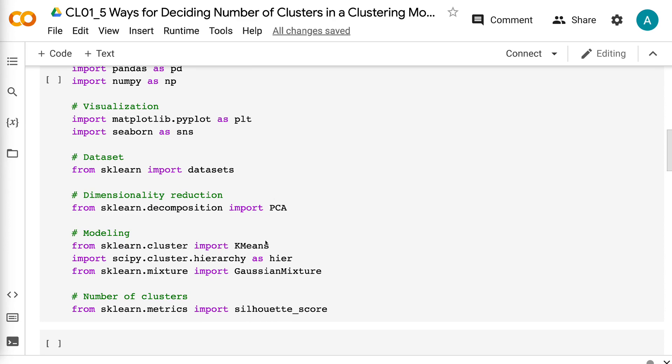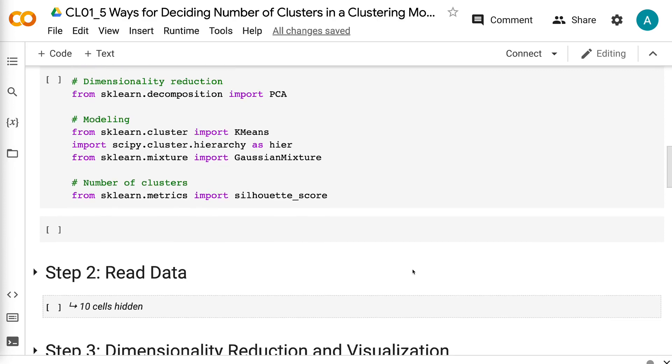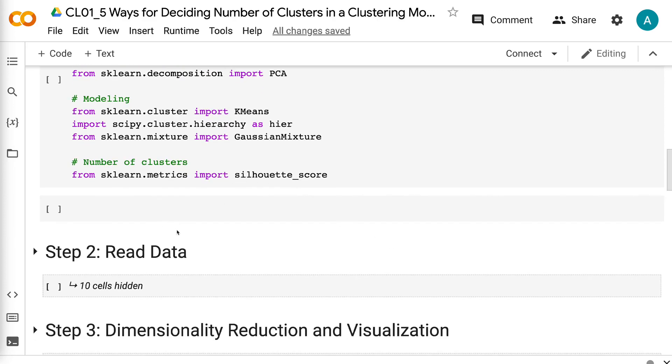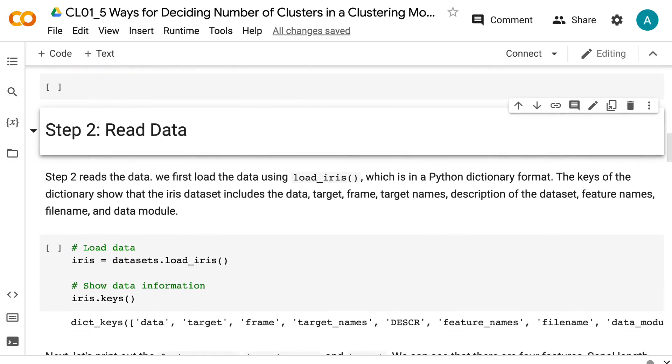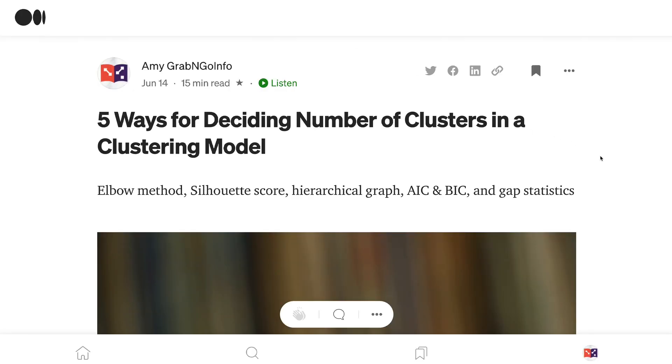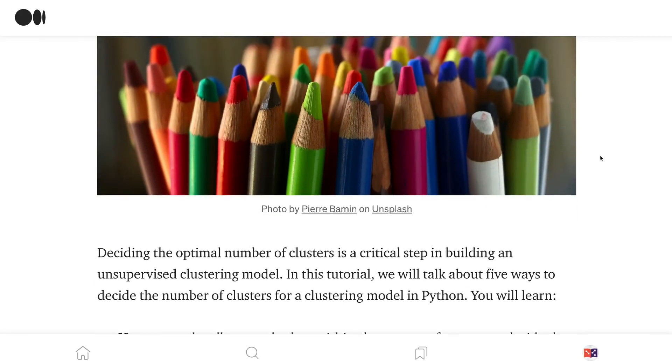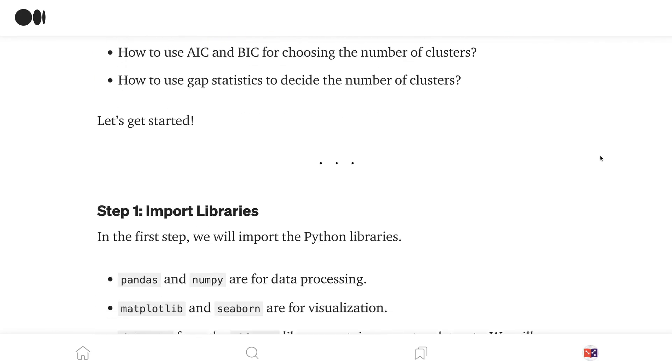K-means, hierarchical agglomerative clustering, and Gaussian mixture are three widely used clustering models. Silhouette score is a metric to evaluate clustering model performance. To get the code for this tutorial, please check out my blog post on Medium.com. I will put the link in the video description.